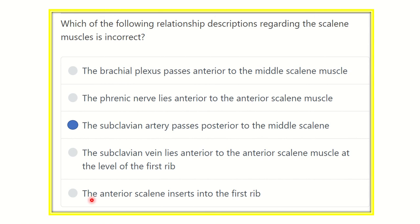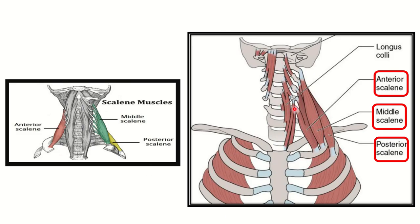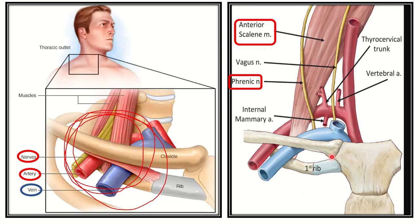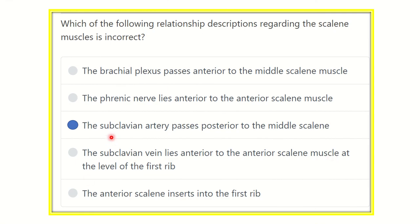Finally, the anterior scalene inserts into the first rib - we saw that is true. Middle scalene also inserts into the first rib, but the posterior scalene differs in that it inserts into the second rib. So our final answer is: the subclavian artery passes posterior to the middle scalene - this is false, because the subclavian artery passes anterior to the middle scalene. Thank you all.